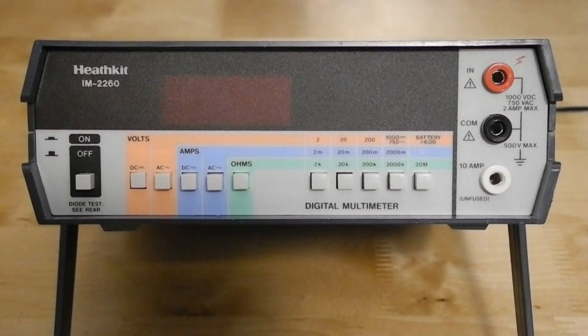Resistance ranges are 2K, 20K, 200K, 2000K, and 20 megaohms. It also features a diode test resistance range that shows the forward voltage drop.